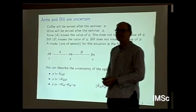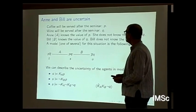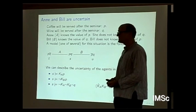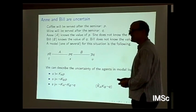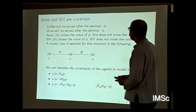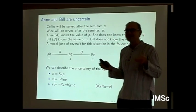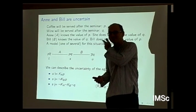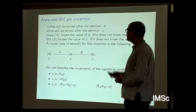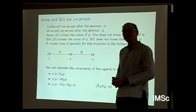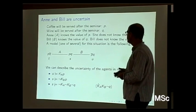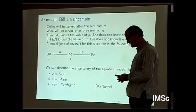Here is such a setting. We have two propositions: one is 'coffee will be served at the seminar,' and the second is 'wine will be served at the seminar.' We might be uncertain about which of these is true or false. Both could be true in principle. We have two agents: N knows the value of P but doesn't know the value of Q, while B knows the value of Q but doesn't know the value of P.